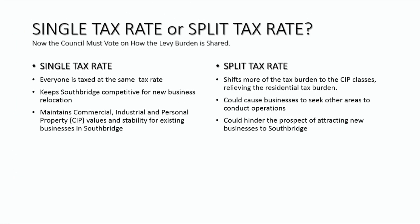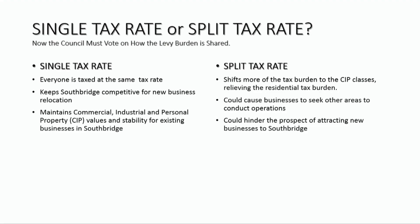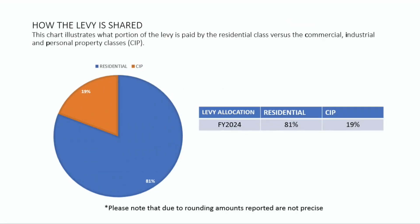With a single tax rate, everybody pays an equal amount based on the valuation of their property, their businesses, everything. Shifting rates would put more burden on the CIPs — commercial, industrial, and personal property classes. Here's the breakdown: it's virtually the same. In fact, the residential went up a very small amount compared to the commercial. Approximately 19% of your value is commercial, industrial, and personal property.